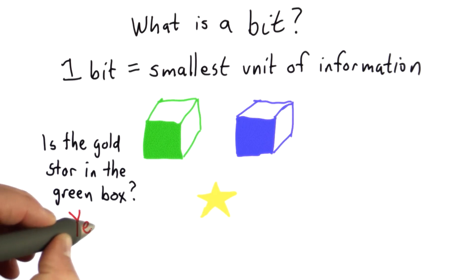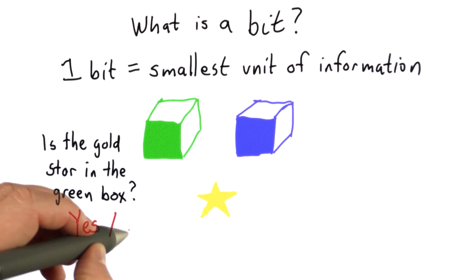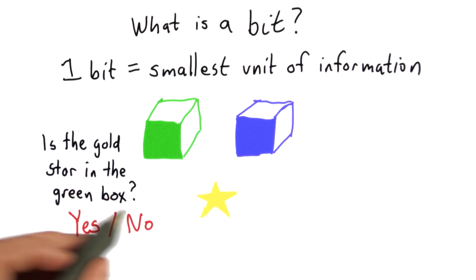And when you learn which one it is, that's one bit of information. That allows you to go from having two choices down to one choice. And then you know, if the answer was yes, the gold star is in the green box. That's the one you should open.